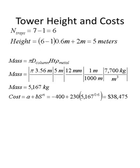To determine the cost of the tower, we need the mass of the metal, given by the perimeter of the column times its height times the thickness times the metal density. For our 3.56 meter tower, a thickness of 12 millimeters is appropriate, and using steel with a density of 7,700 kilograms per cubic meter, the total mass is 5,167 kilograms. Plugging that into our cost formula, the cost for this vessel is around $38,500.